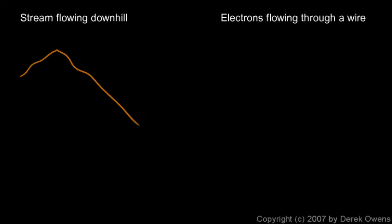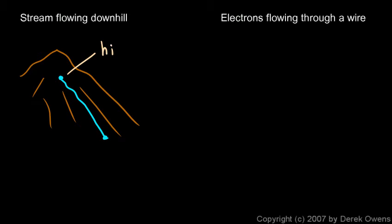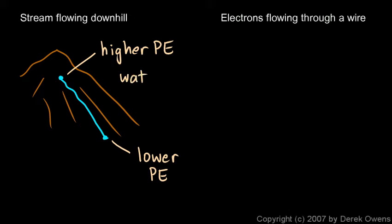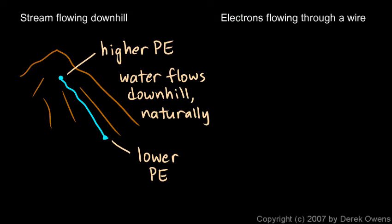It's helpful to understand voltage by comparing it to something familiar — water flowing down a hill. We're going to compare electricity flowing through a wire to water flowing down a hill. Imagine a hillside with a spring where water flows out and down. The water starts at a position of higher potential energy; water up high has more gravitational potential energy than water down low. It flows naturally to a point of lower potential energy — water always flows downhill, never uphill, all by itself.